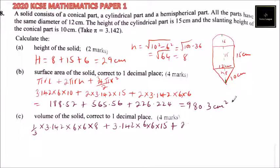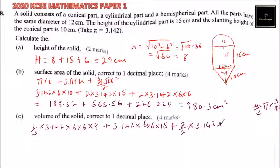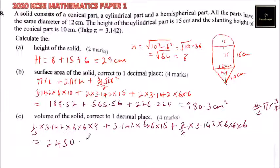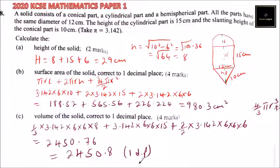Then we add the hemispherical part. We use 4 divided by 3 times πr³, and then divide by 2 because it is a half. The 2 cancels, giving us 2 over 3 multiplied by 3.142 multiplied by 6 cubed (6 × 6 × 6). When you compute all of that, you get 2,450.76, which rounds to 2,450.8 cubic centimetres to 1 decimal place.